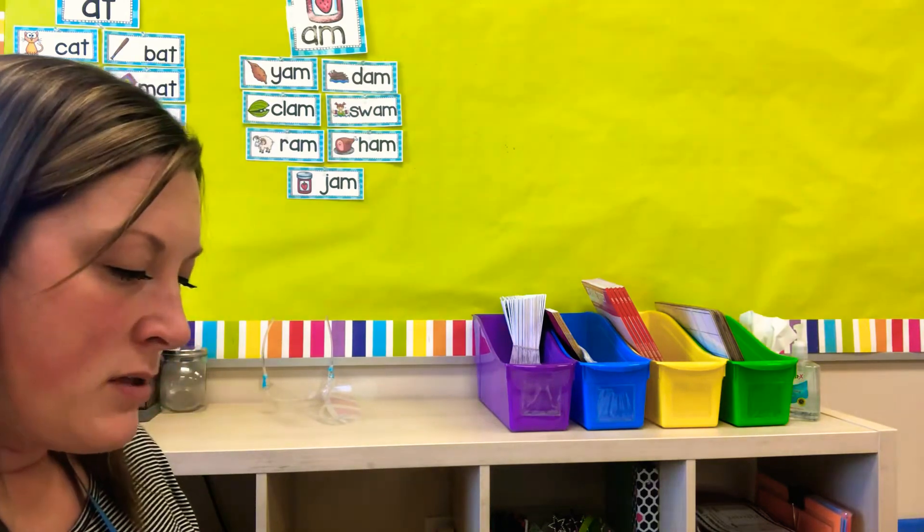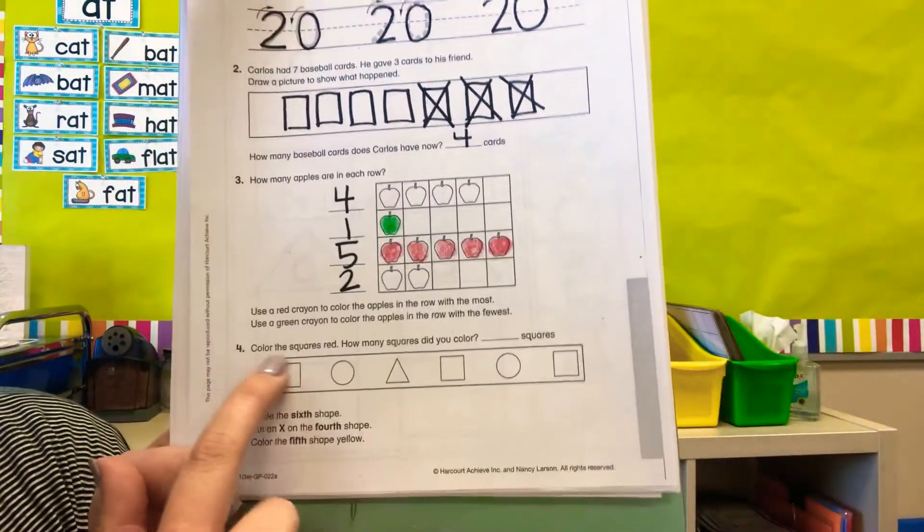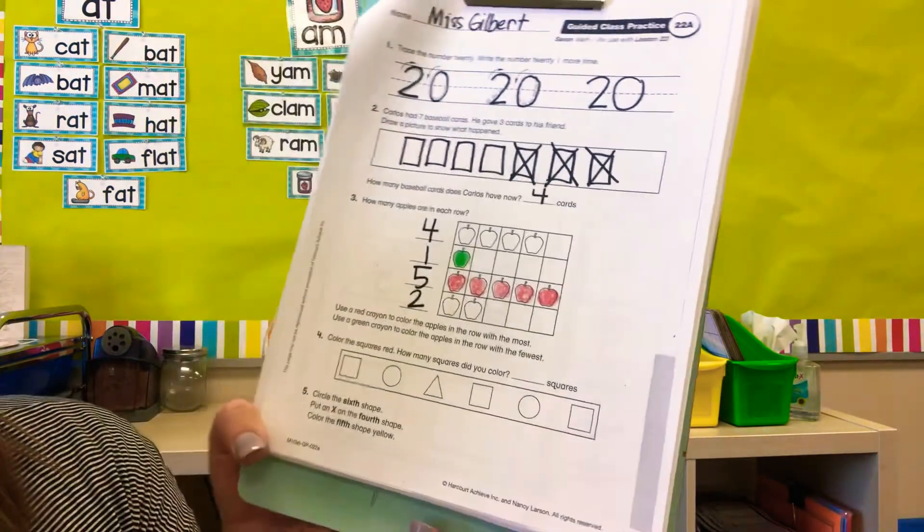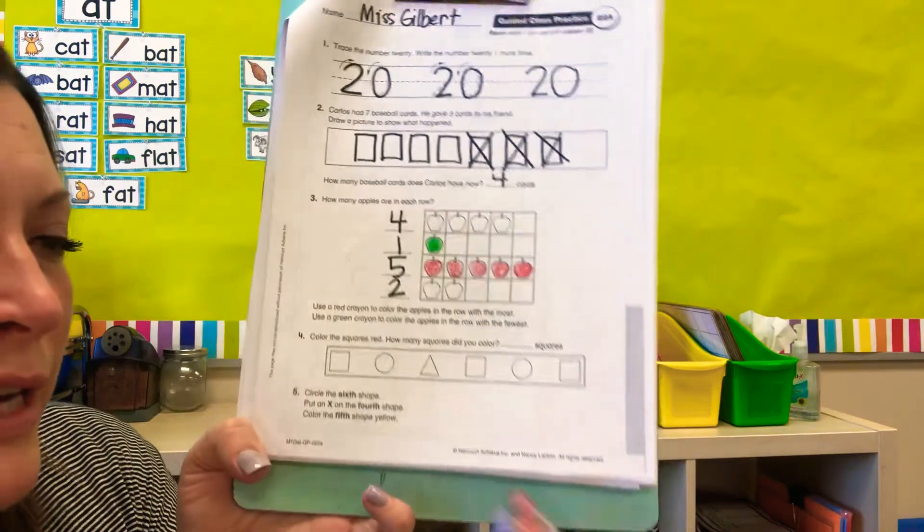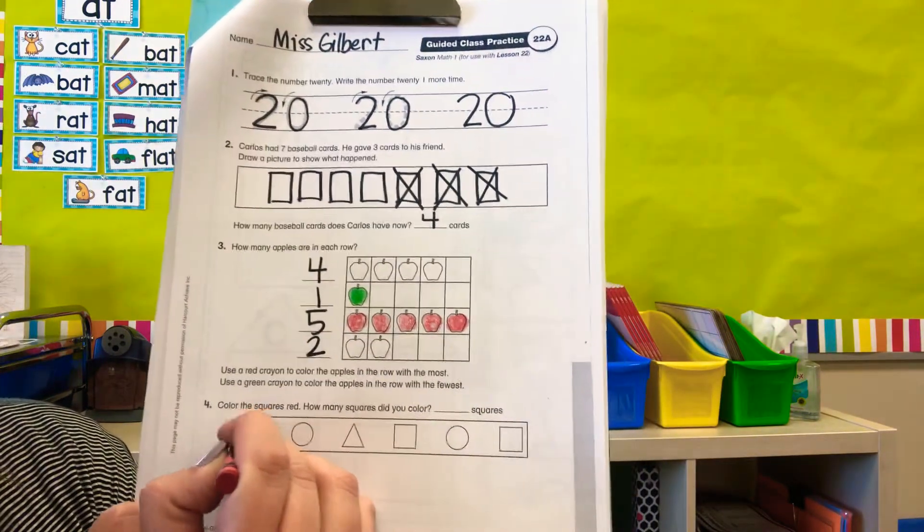Keep your red crayon out. It says on number four, color the squares red. How do you know if something is a square? A square has four equal sides. So this first one is a square. We're going to color the squares red.